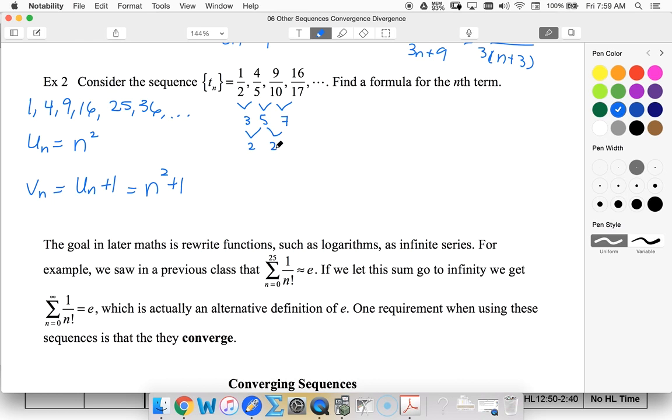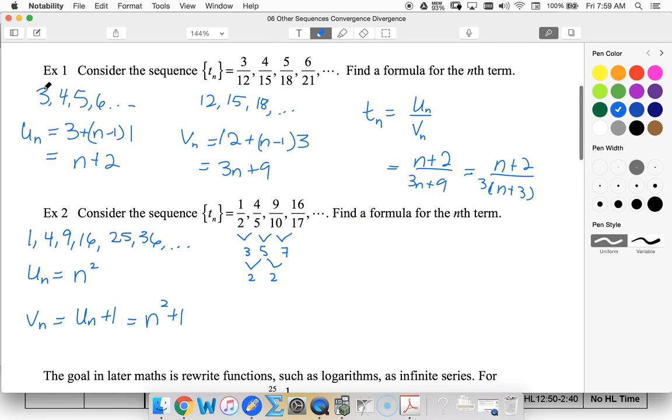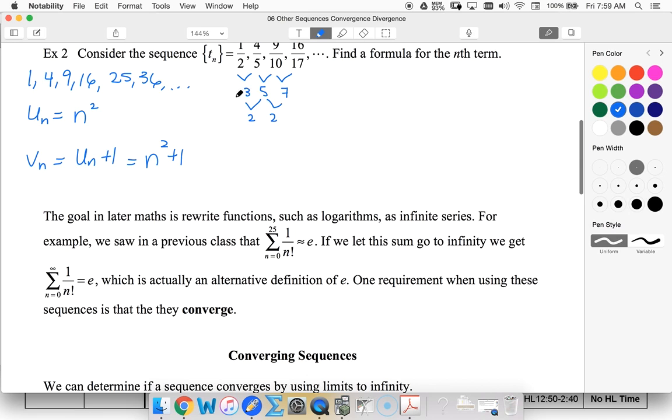If the first set of numbers, like we had here, so the difference between this is 1, 1, 1, 3, 3, 3, this is linear. Down here, it wasn't until the second row that I had a common difference, so that means this must be a quadratic pattern.